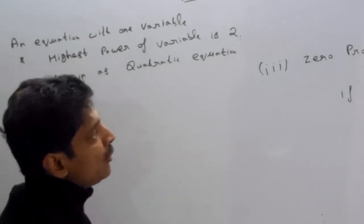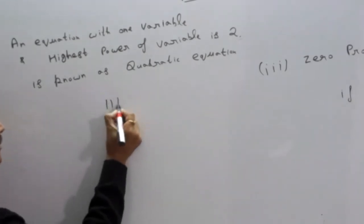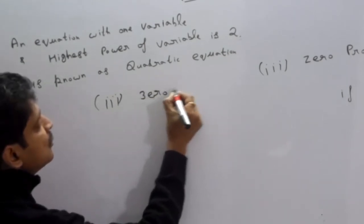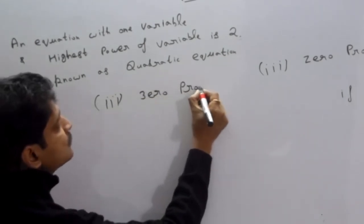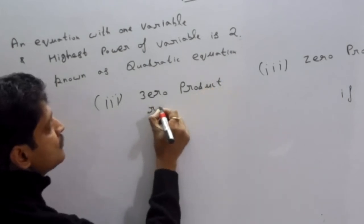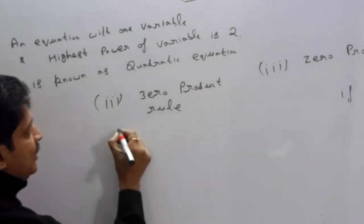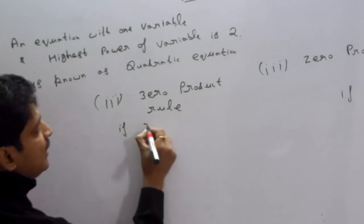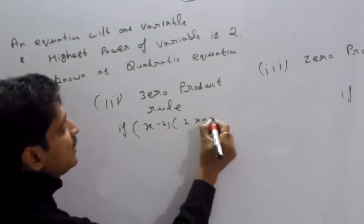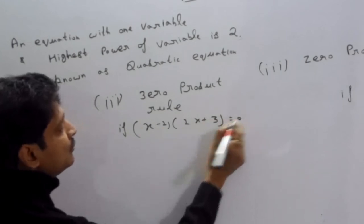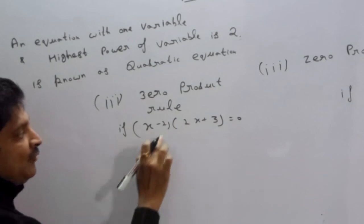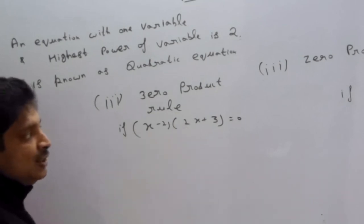Third point: zero product rule. If given: x minus 2 multiplied by 2x plus 3 is equal to zero, then by the zero product rule, at least one of them is zero.